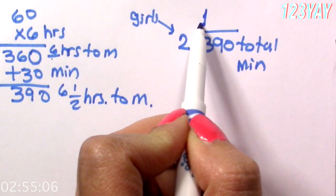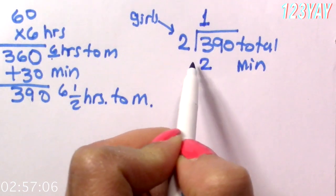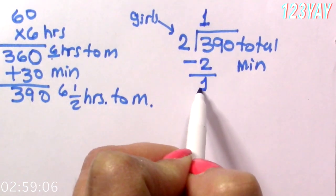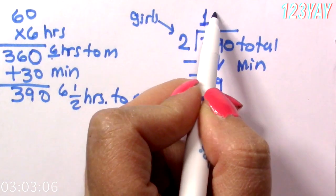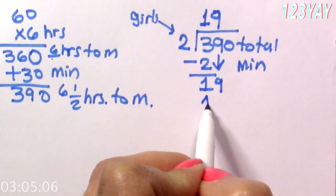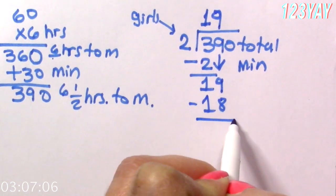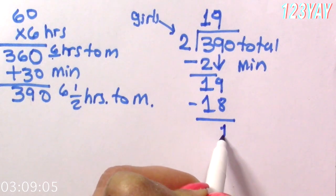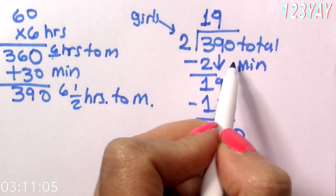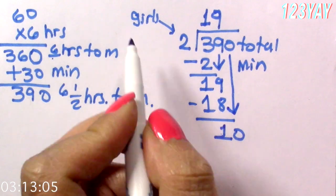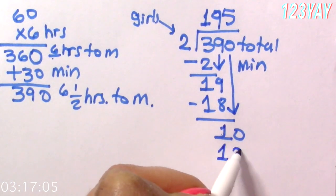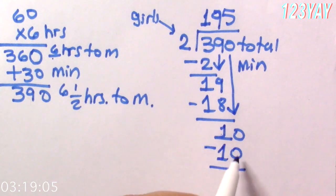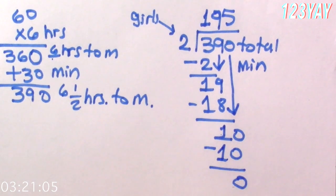Two times one is two. Subtract and drop. Two times nine is 18. Subtract and drop. Two times five is 10. Subtract and we have zero remaining. What does this mean guys?